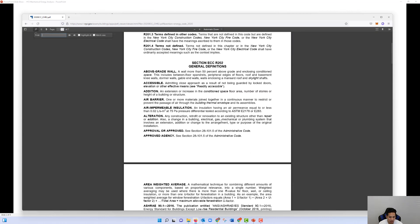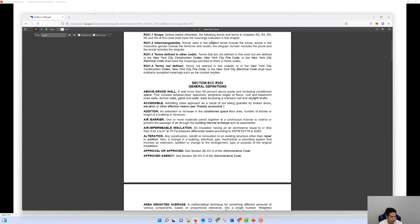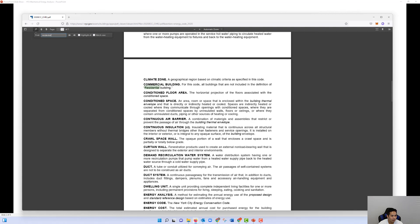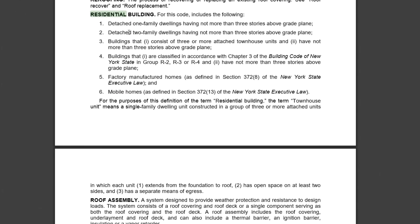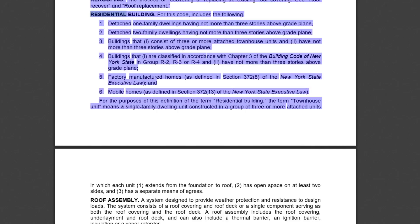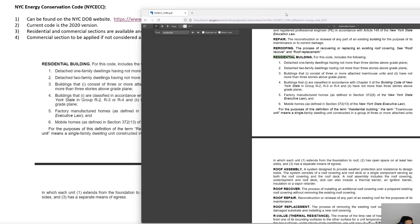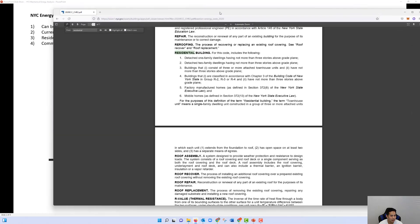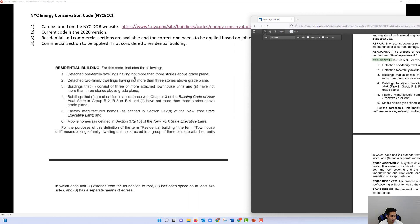You can do a Control+F, type in 'residential,' and find what constitutes a residential building. The definition shown in the code is the same one referenced in the presentation, so it can be easily located and cross-referenced.